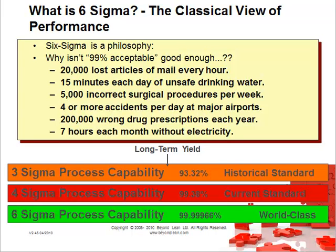So, the historical view of 99% being good enough just isn't there anymore. The standard was Three Sigma process capability, which is just over 93%. The current standard we're moving to is Four Sigma — 99.38%. And then what we're aiming for with Six Sigma is World Class: 99.99966%.